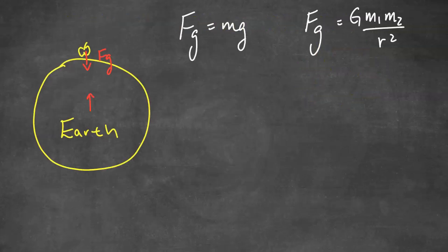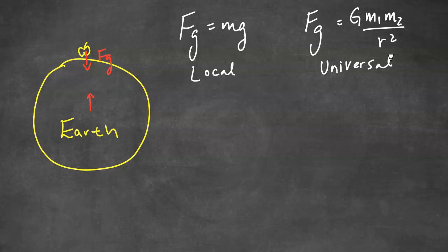You might wonder: what is the difference between Newton's law of universal gravitation and Fg equals Mg, since they both seem to calculate gravitational force? I like to think of Fg equals Mg as the local version, while big G times M1 times M2 over R squared is the more universal version. Fg equals Mg works on the surface of the Earth or another planet where you know the gravitational field, but for the gravitational force between any two masses, you need to use the universal version.